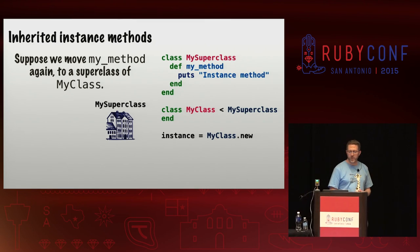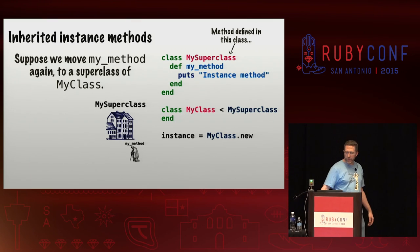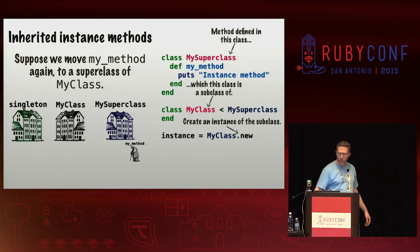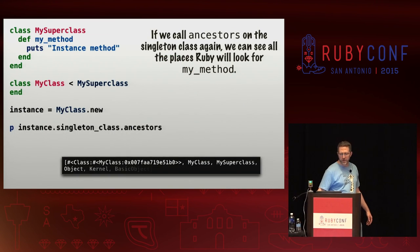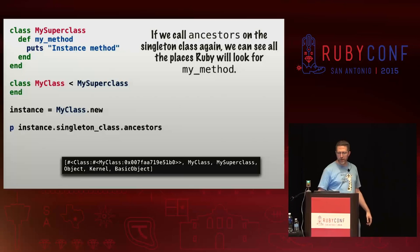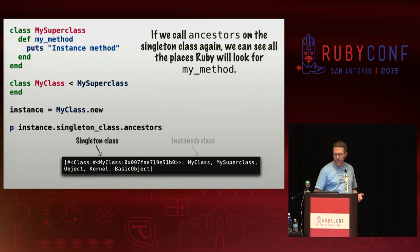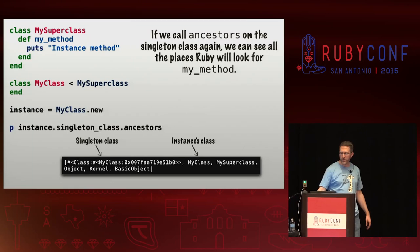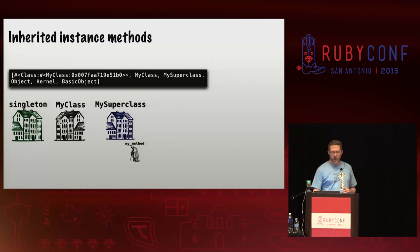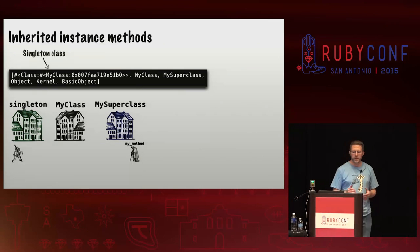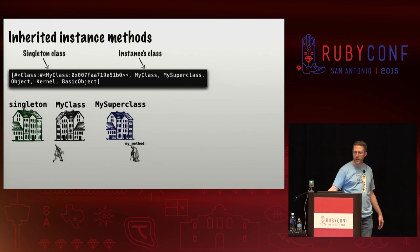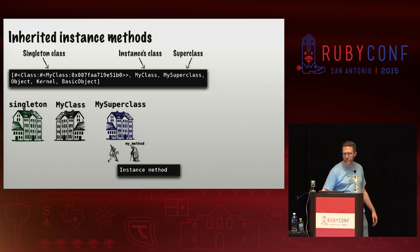Now suppose we were to move my method to a super class of my class. We define my method up there on my super class, and say that my class is a subclass of that. If we call ancestors on that singleton class again, we can see all the places that Ruby will look for my method. It starts with the singleton class, proceeds to my class as before, and the new addition here is my super class — where it finds my method and invokes it.